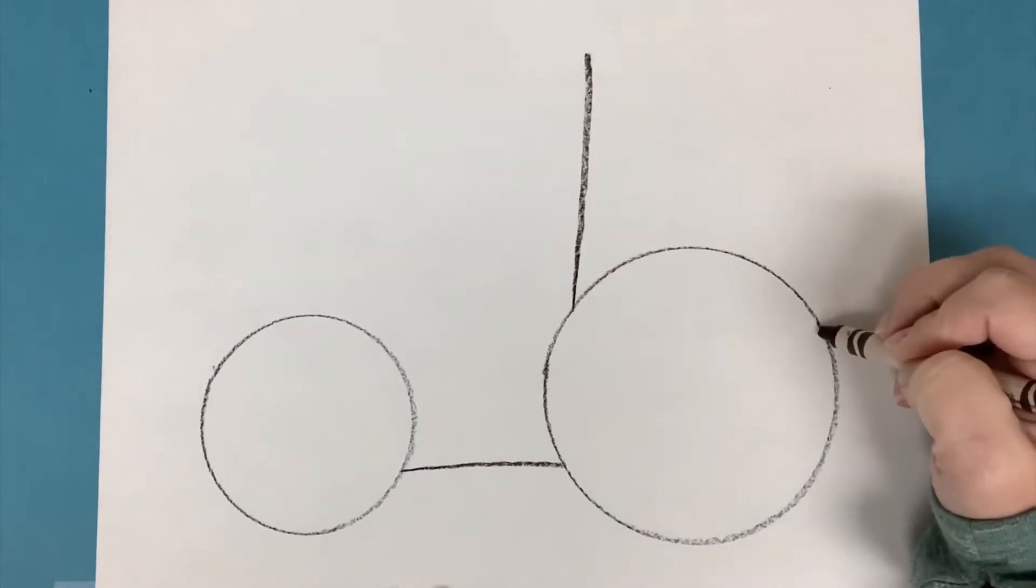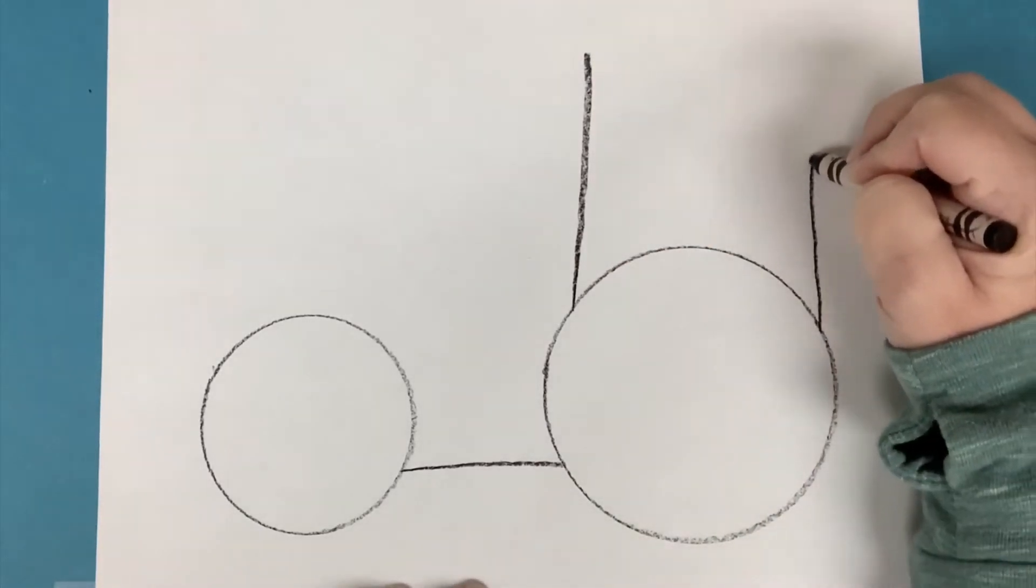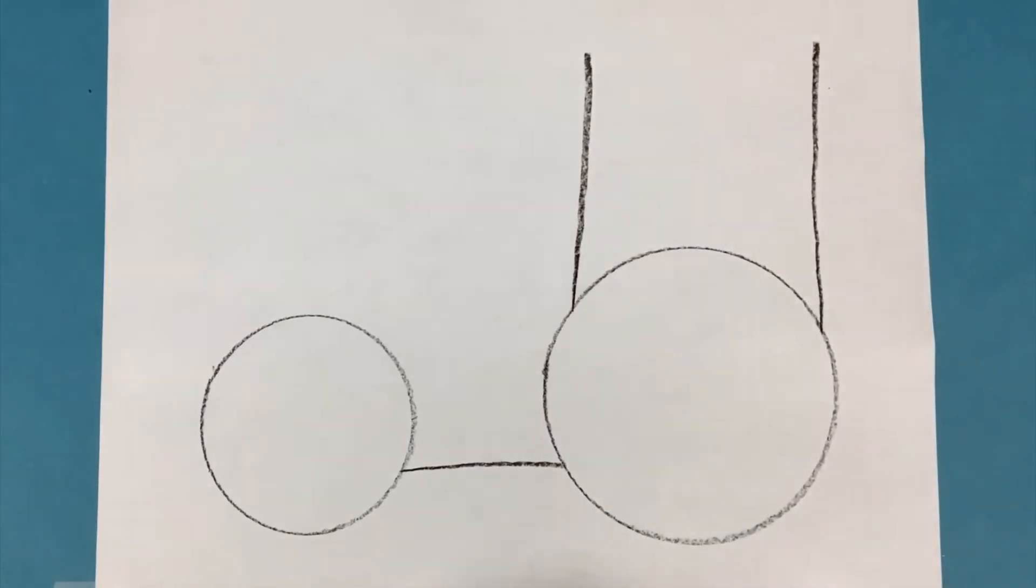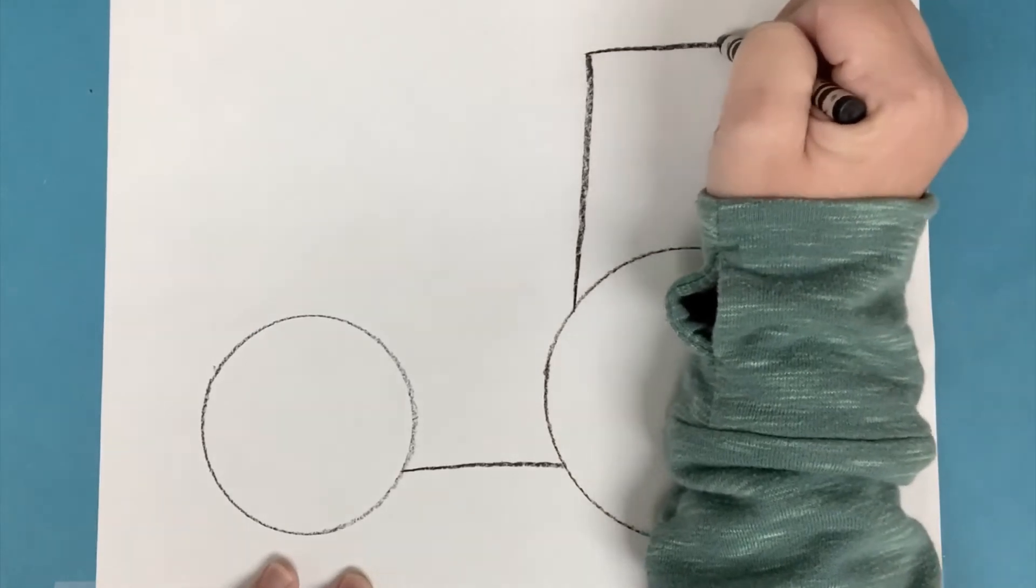And then on the other side, do the same. Another vertical line going up. And let's close that off with a horizontal line at the top.